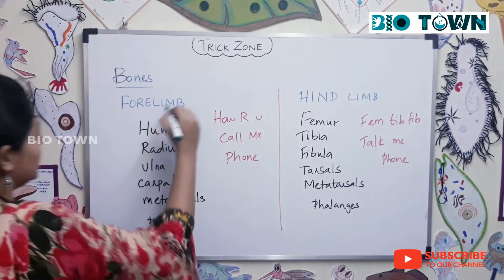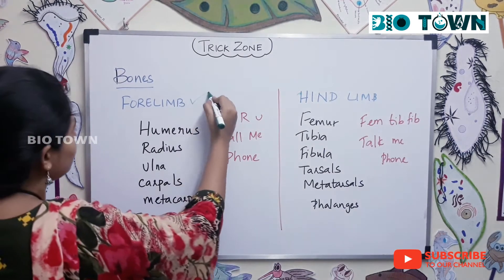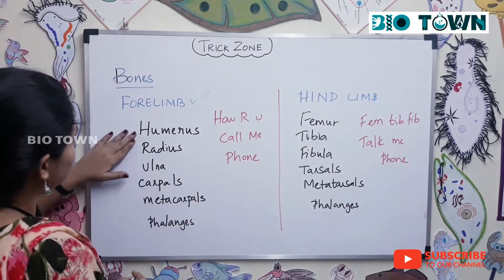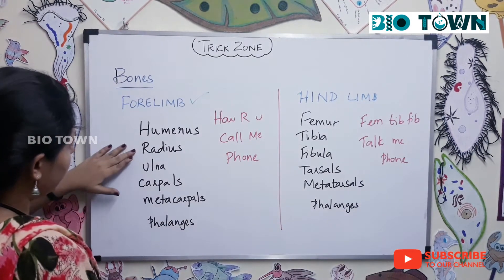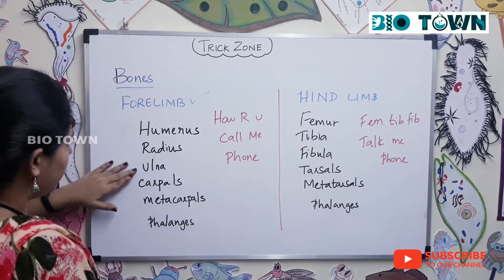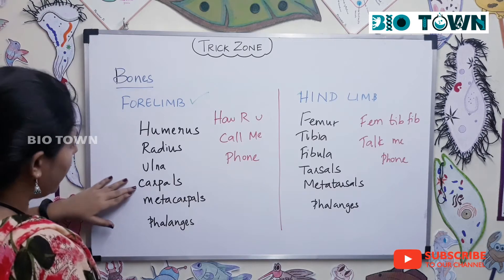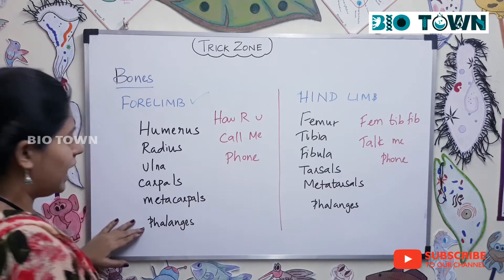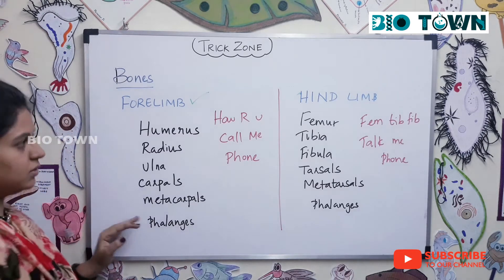First, the bones of forelimb: humerus, radius, ulna, carpals, metacarpals, and phalanges.